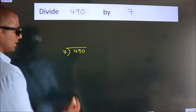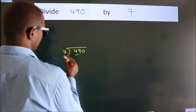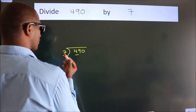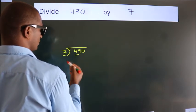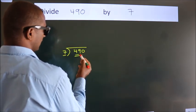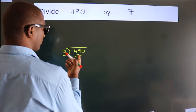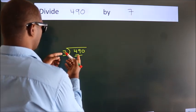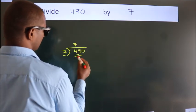Next. Here we have 4. Here 7. 4 is smaller than 7, so we should take two numbers. 49. When do we get 49? In the 7 table. 7 sevens, 49.